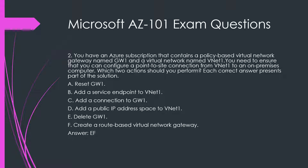A. Reset GW1. B. Add a service endpoint to VNet1. C. Add a connection to GW1. D. Add a public IP address space to VNet1. E. Delete GW1. F. Create a route-based virtual network gateway. Answer: E and F.